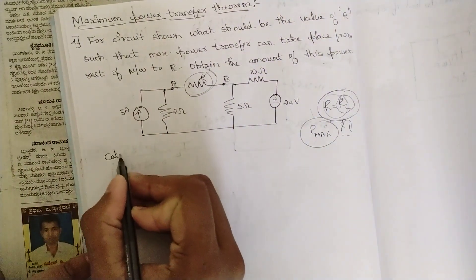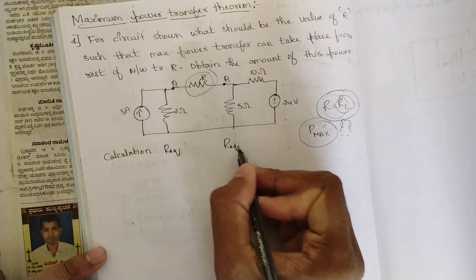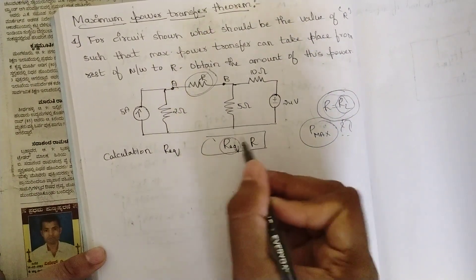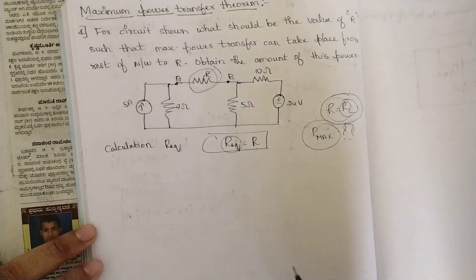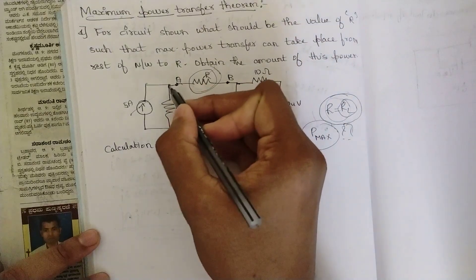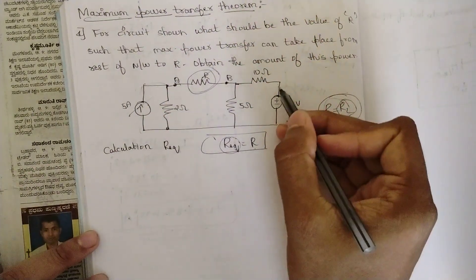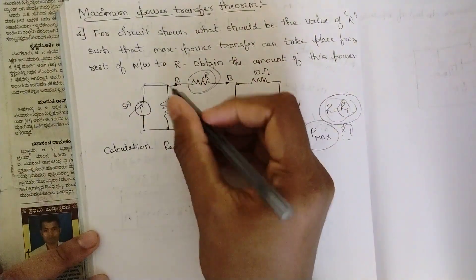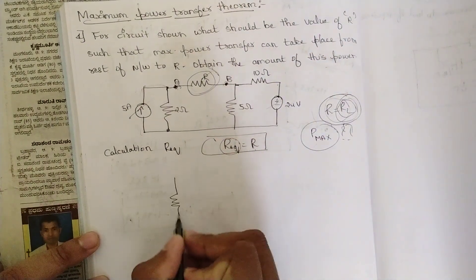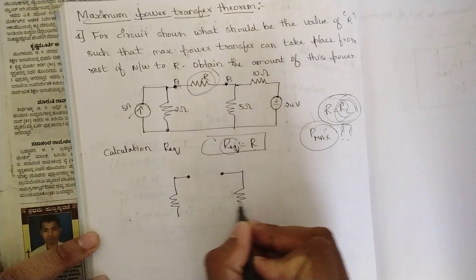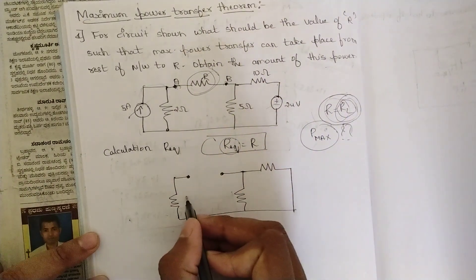We start with the calculation of R_equivalent. Whatever value we get for R_equivalent will be equal to R. To calculate R_equivalent — same as in Thevenin's theorem — we eliminate all sources: the current source branch is open-circuited, and the voltage source is short-circuited. The load R_L is also removed. We are left with a 2 ohm resistor, a 5 ohm resistor, and a 10 ohm resistor, with a short circuit and an open circuit at the respective source locations.